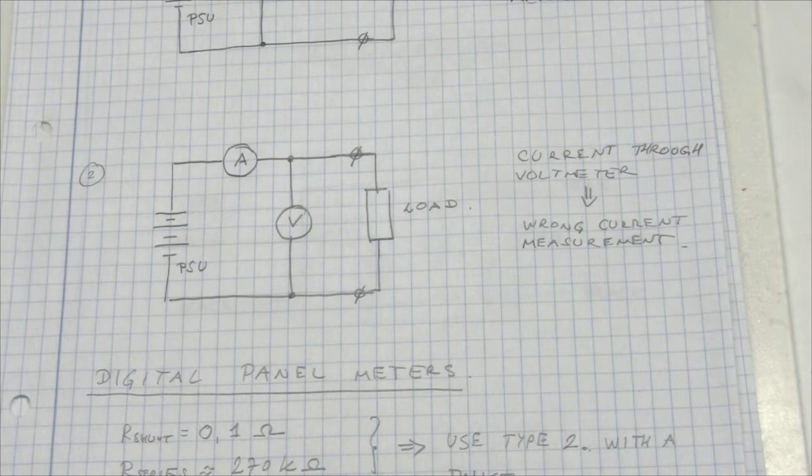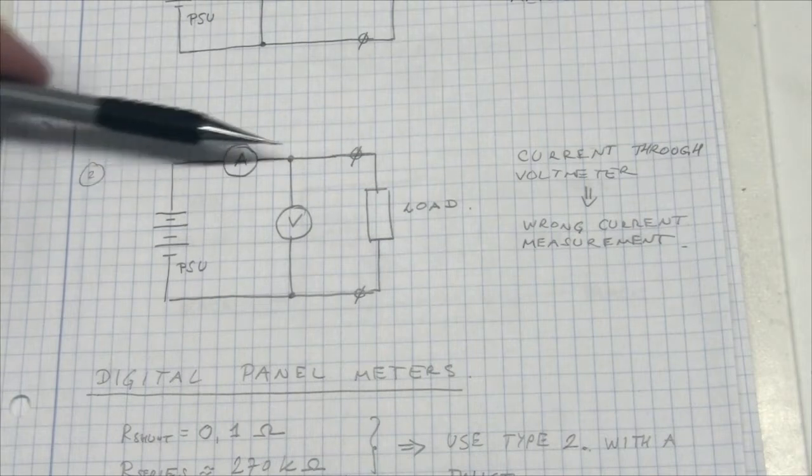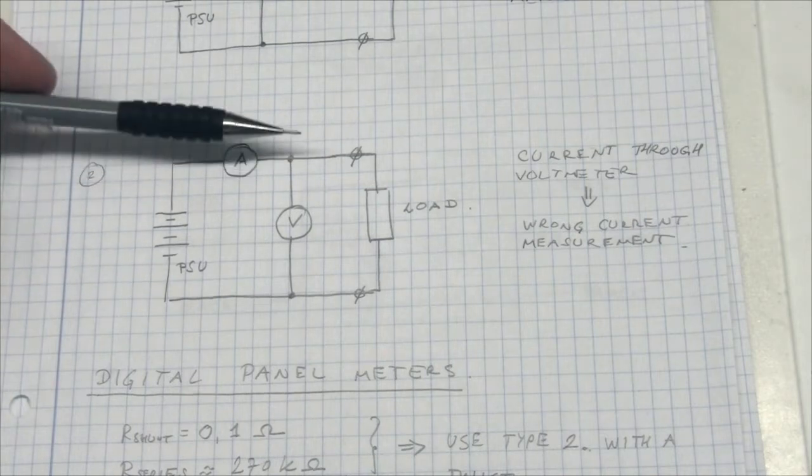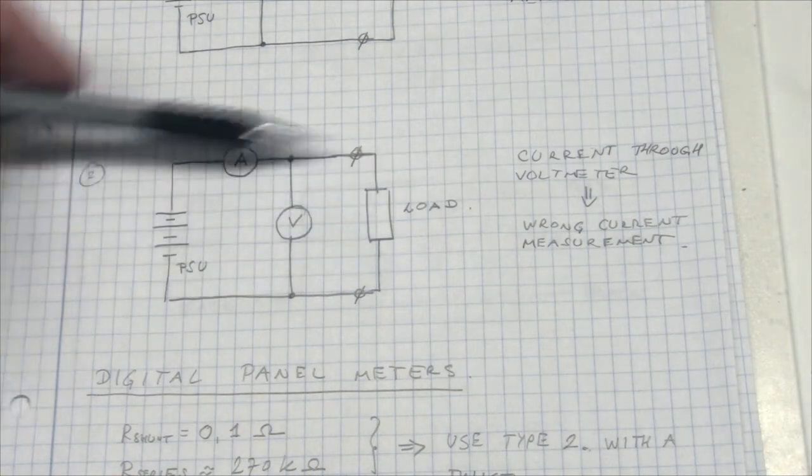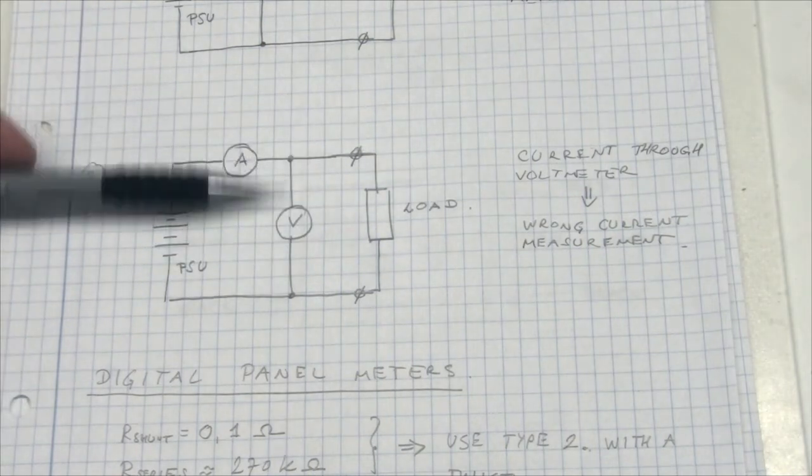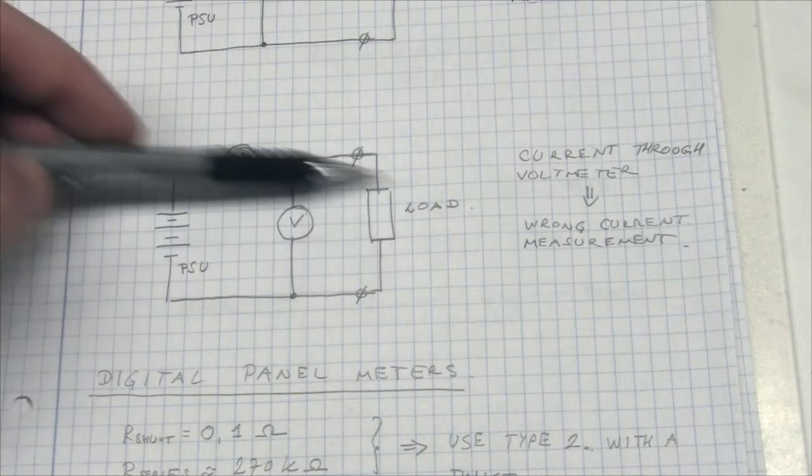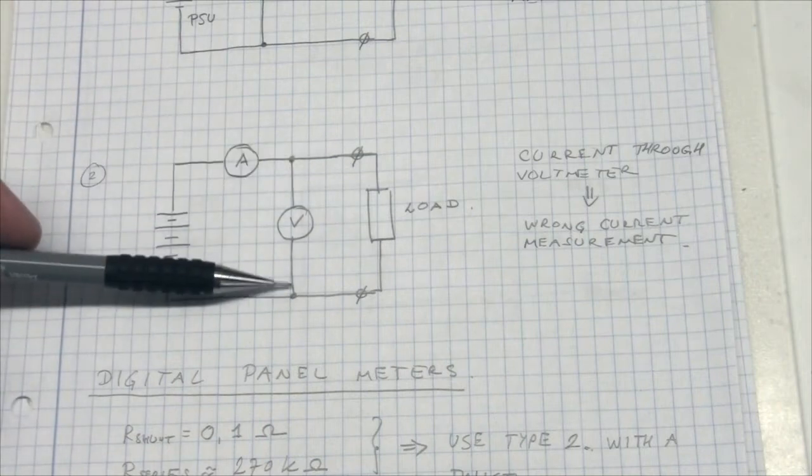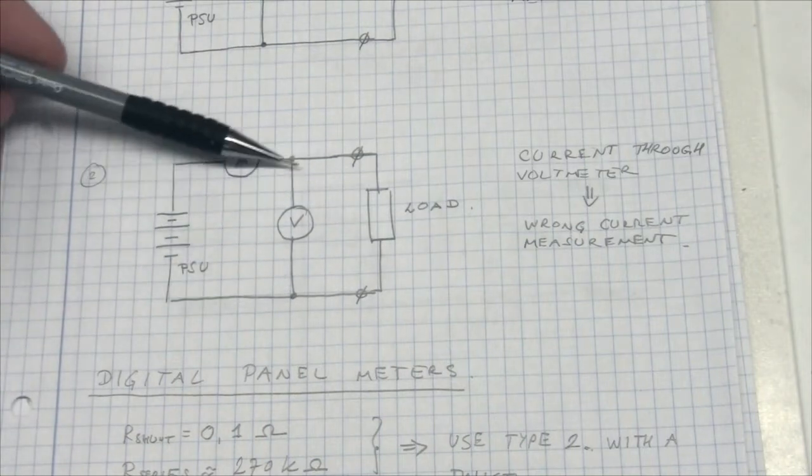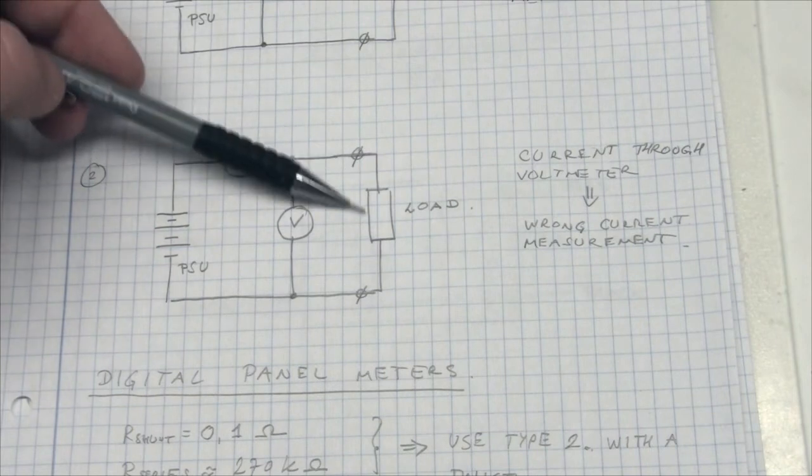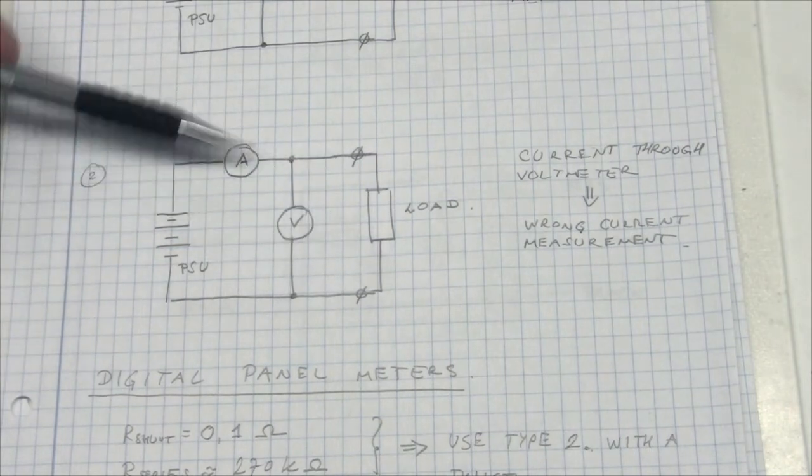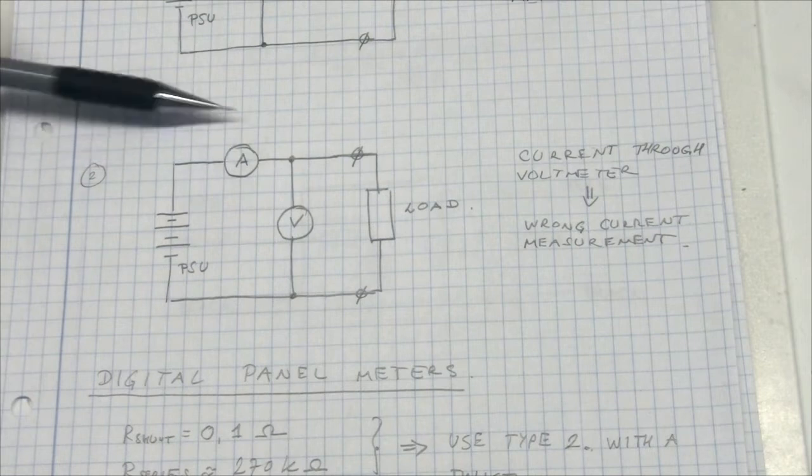The other configuration has the amp meter in series with the power supply and the volt meter across our load. In this case we will obviously measure the voltage across our load correctly in all cases. But because there is current flowing through the volt meter in addition to the current flowing through the load, the amp meter will measure a little bit too high a value.